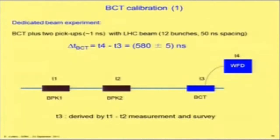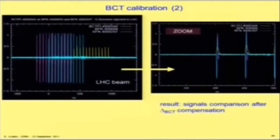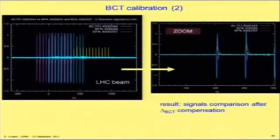We wanted to be sure to have something truly representative of what the protons do, so we used a special beam condition: the LHC beam, which has bunches of one nanosecond separated by 50 nanoseconds, giving a comb of point-like pulses. You can overlay these with the signal of the BCT — this is before calibration — and this is the result after overlaying the two, which allows you to measure a delay of 580 nanoseconds.